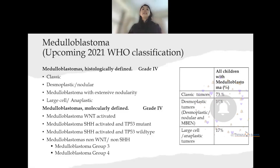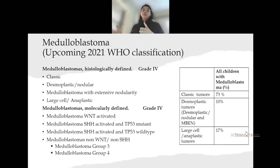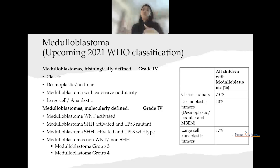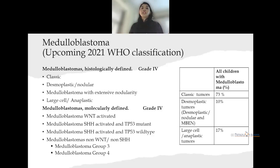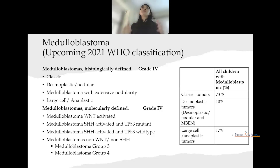Sonic hedgehog is divided into TP53 wild type and TP53 mutated. Next we have the non-WNT and non-sonic hedgehog type, comprising group 3 and group 4. The revised distribution among children shows classic tumors now comprise 73 percent, desmoplastic tumors — including both desmoplastic nodular and extensive nodularity — comprise 10 percent, and large cell anaplastic type comprises 17 percent.